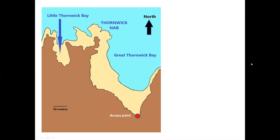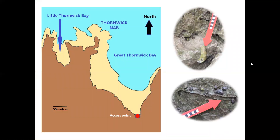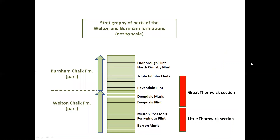In Great Thornwick Bay there are examples of isolated nodular and tube flints, and of chalk relatively rich in inoceramid bivalve shells. This is again chalk of the Welton formation, and as in Little Thornwick Bay the beds are dipping at a low angle towards the land, so we can move up the stratigraphic sequence by working back to the access point for the beach. We can work up through bands of marl and flints — marker bands that allow confident regional correlation. One such important marker is the Deepdale flint, which is predominantly nodular but in places is sufficiently dense to be classed as semi-tabular.